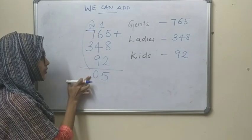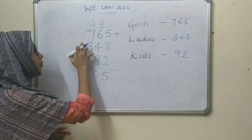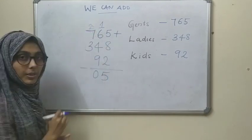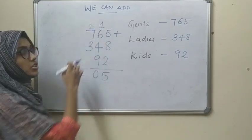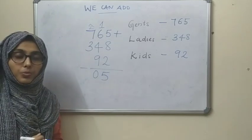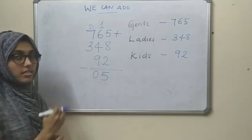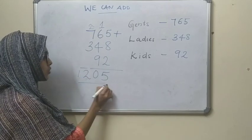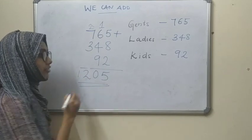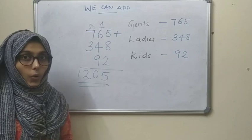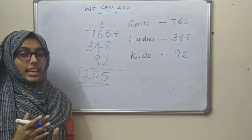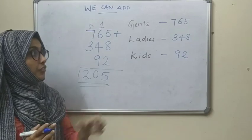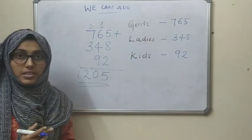We write that 2 here. Now 7 plus 2 is 9, plus 3 is 12. So we got the same answer — 1205 — when we added all three numbers together in one step.